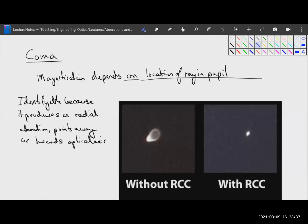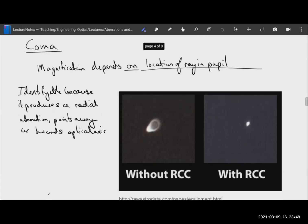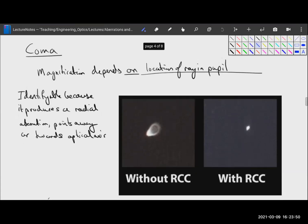Remember, spherical aberration affects everything equally, no matter where it is in your field of view. Coma becomes worse the farther away you are from the optical axis. The definition of this is really that the magnification depends on the location of the ray in the pupil, which is really to say the location that the ray crosses the lens.